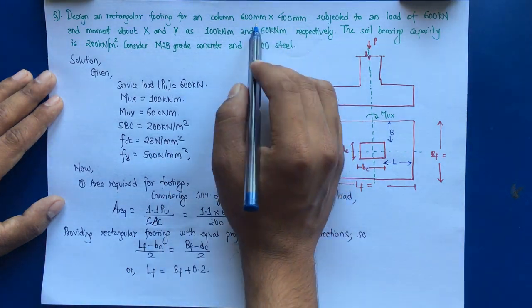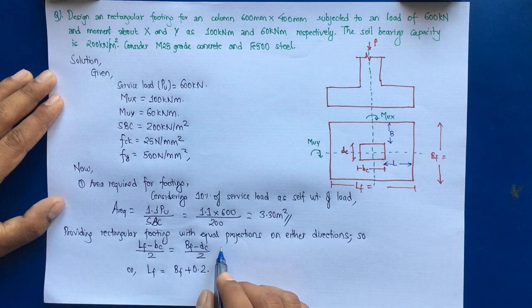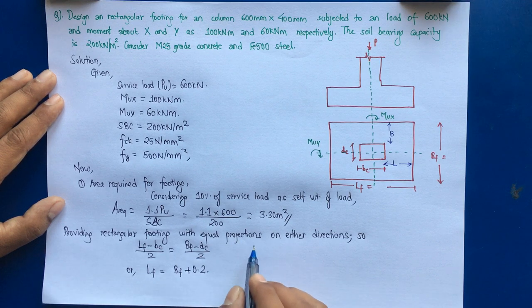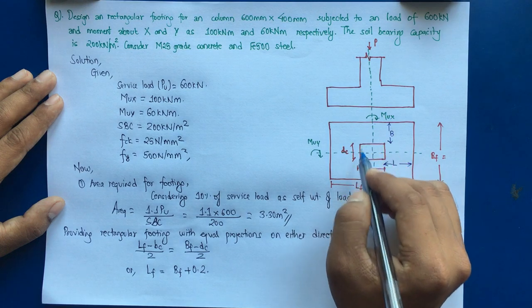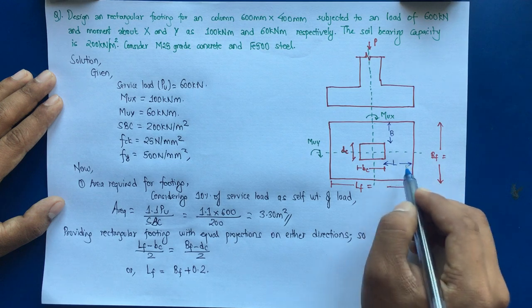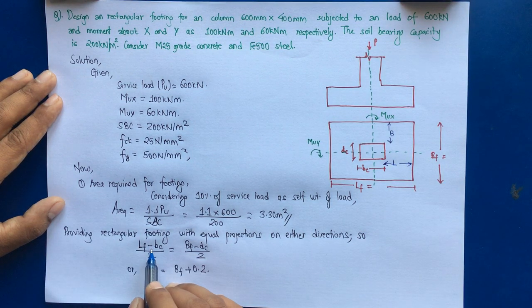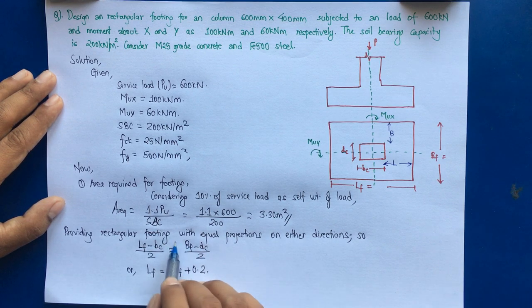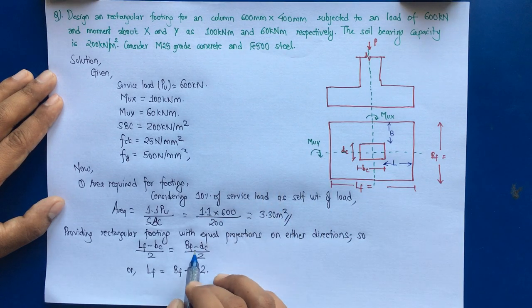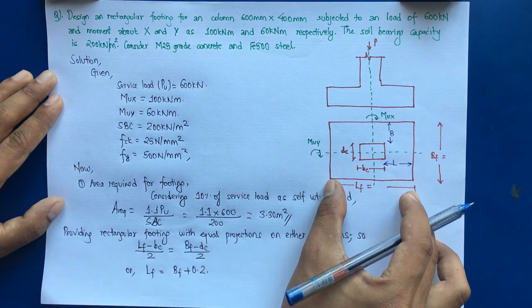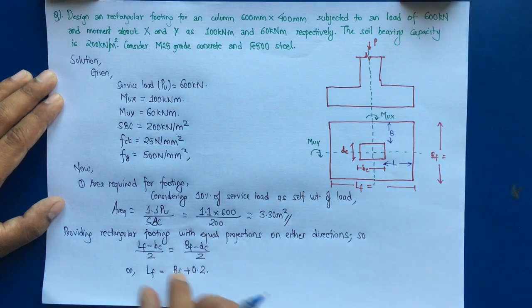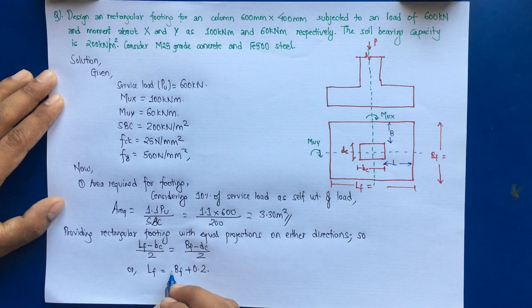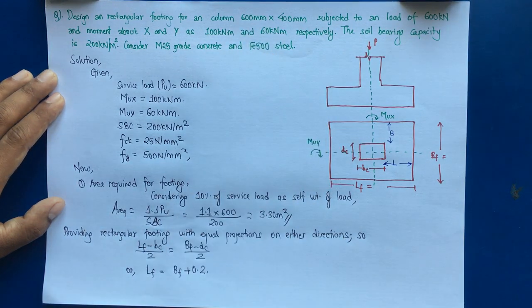We will provide a rectangular footing with equal projection on either side, making it economical and easier to design — similar to a square footing approach. For equal projection: (Lf − BC)/2 = (Bf − DC)/2. This gives Lf = Bf + 0.2, since BC − DC = 0.6 − 0.4 = 0.2 m. Therefore Bf = Lf − 0.2.